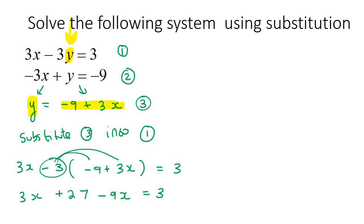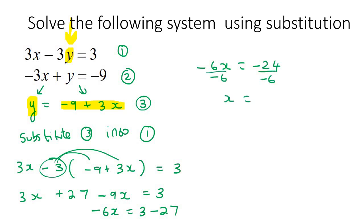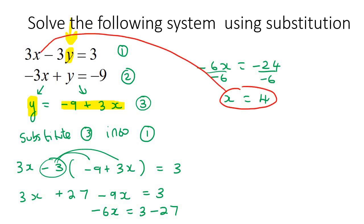Now we simplify. Taking 3X and 9X and subtracting gives negative 6X. Taking 27 over to the other side makes it negative, so we end up with negative 6X equals negative 24. Dividing both sides by negative 6, X is equal to positive 4. Now we need to find Y. You can plug that X back into equation 1, equation 2, or as I like, equation 3, since Y is already by itself there — and it gives the exact same answer either way.